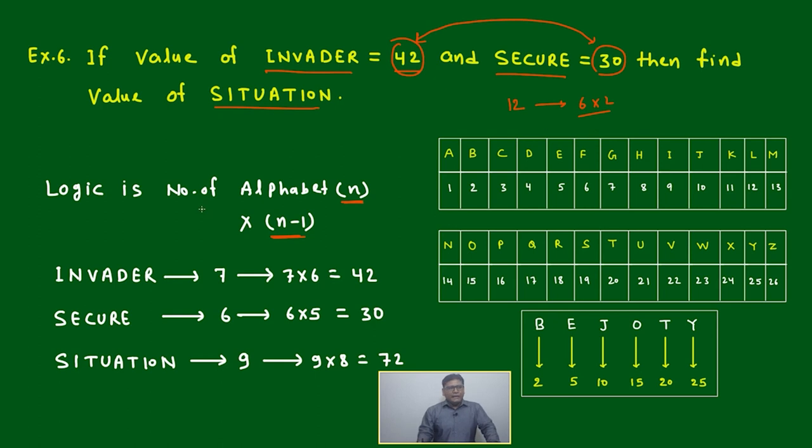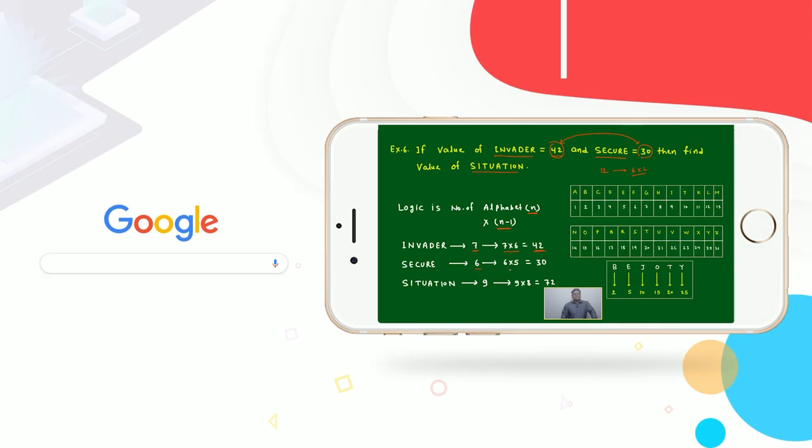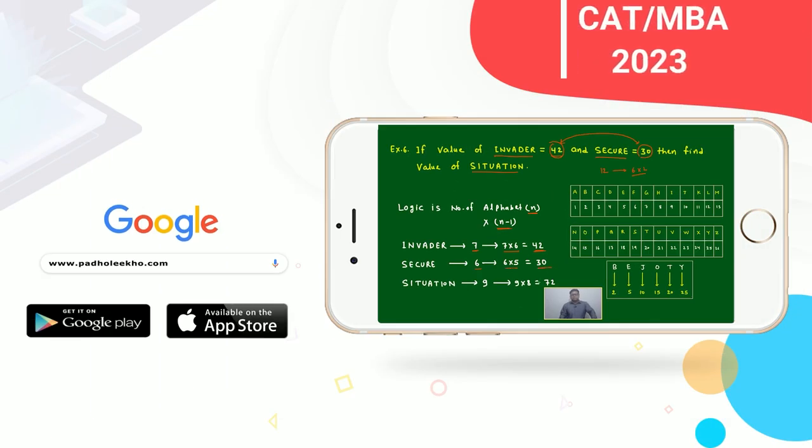Then only we will get a difference like this. Here in INVADER, number of alphabets is 7. If you are multiplying with the next number in decreasing order, then 7 into 6, it will become 42. And SECURE is 6, 6 into 5 it will become 30. Similarly, SITUATION has 9 alphabets, so 9 into 8, it becomes 72.